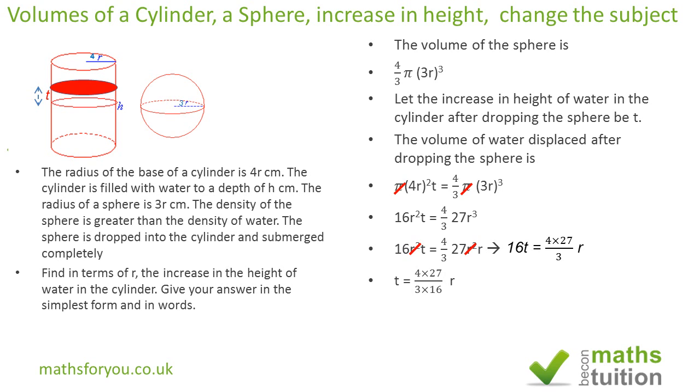If we now divide the numerator by 4 and the denominator by 4, we end up with 1 over 4. If we then divide the numerator by 3 as well, we end up with 9 over 1. So T then becomes 9R over 4 centimeters.